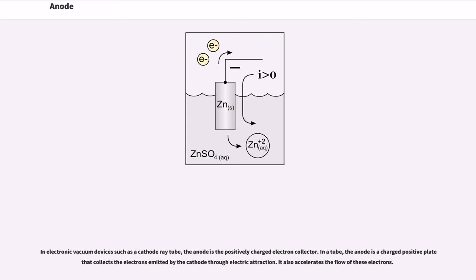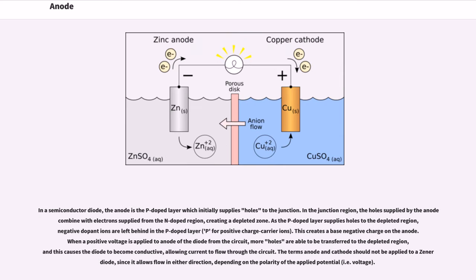In electronic vacuum devices such as a cathode ray tube, the anode is the positively charged electron collector. In a tube, the anode is a charged positive plate that collects the electrons emitted by the cathode through electric attraction. It also accelerates the flow of these electrons.